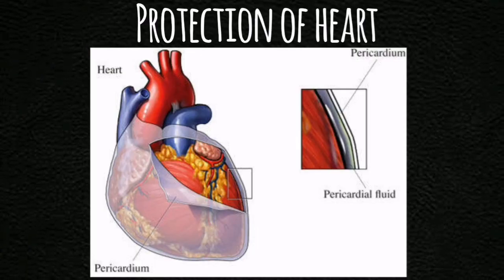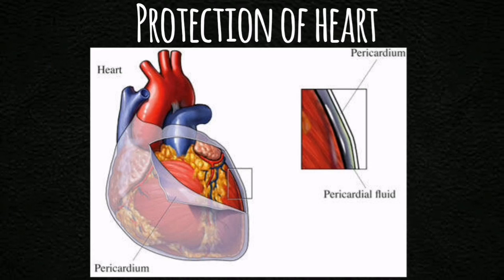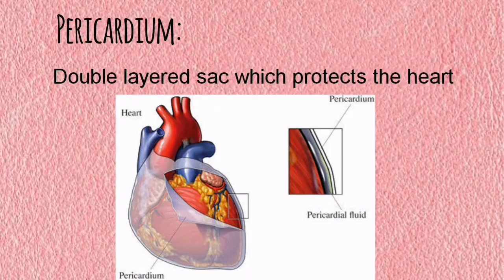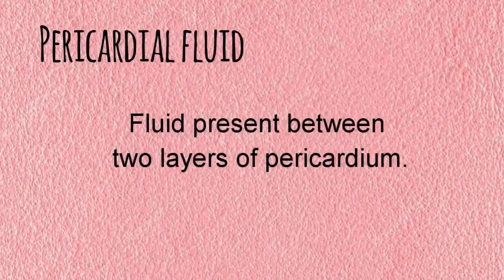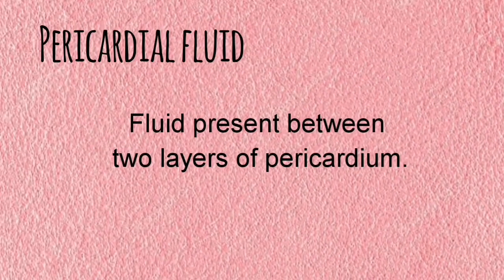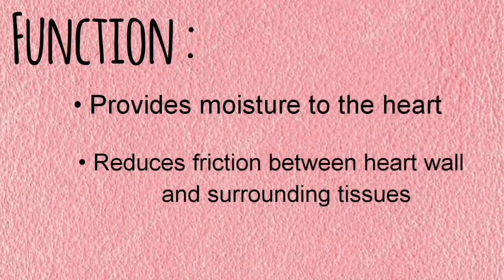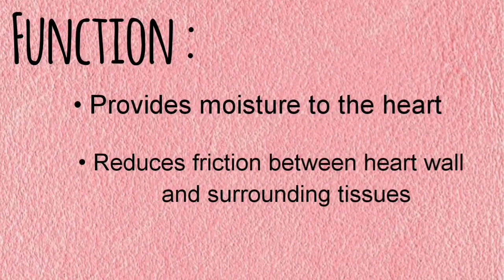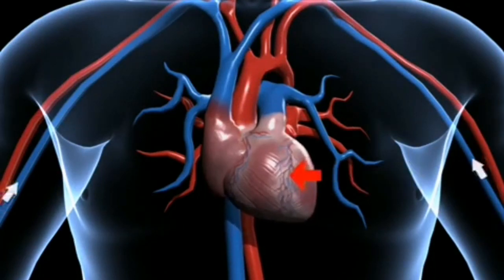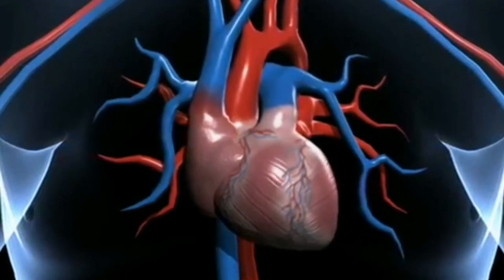In this picture, you can see an outer covering for the heart. What is that? It is called the pericardium. Pericardium is a tough, double-layered sac which protects the heart. The inner layer is called the visceral pericardium and the outer is called the parietal pericardium. Between these two layers there is a cavity filled with pericardial fluid, which is secreted by the pericardium itself. Its function is to provide moisture to the heart and to reduce friction between the heart wall and the surrounding tissue when the heart beats. In this video you can see the movement of the heart — it is pumping blood to different parts of the body. So the function of the heart is to pump blood to various parts of our body.